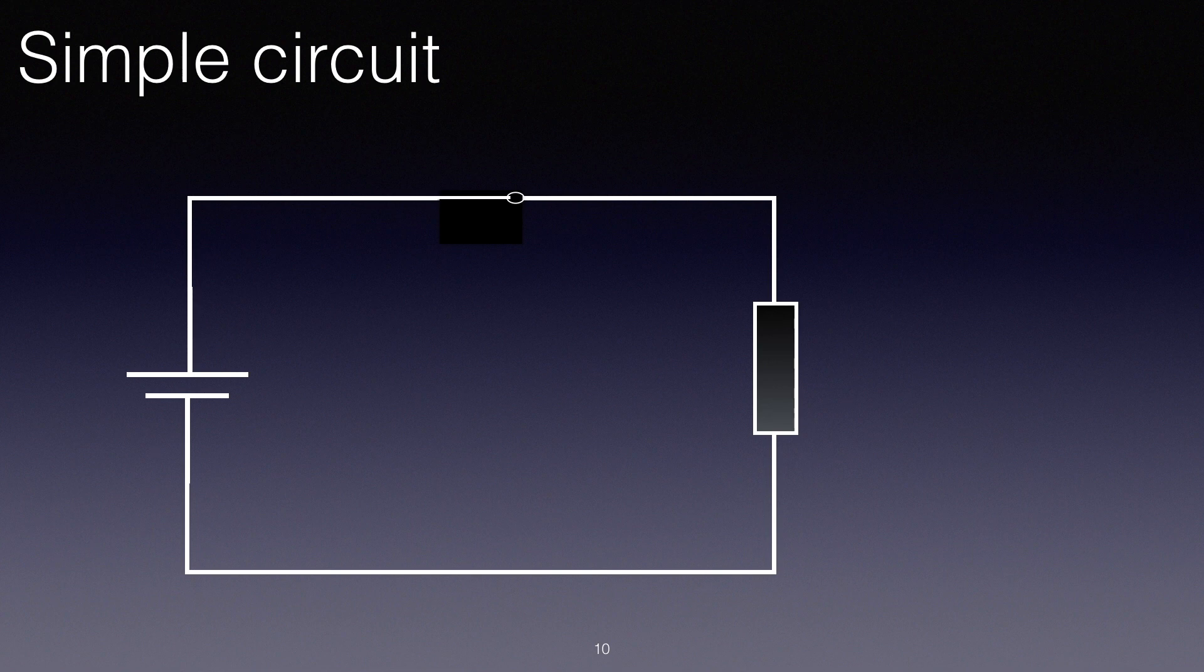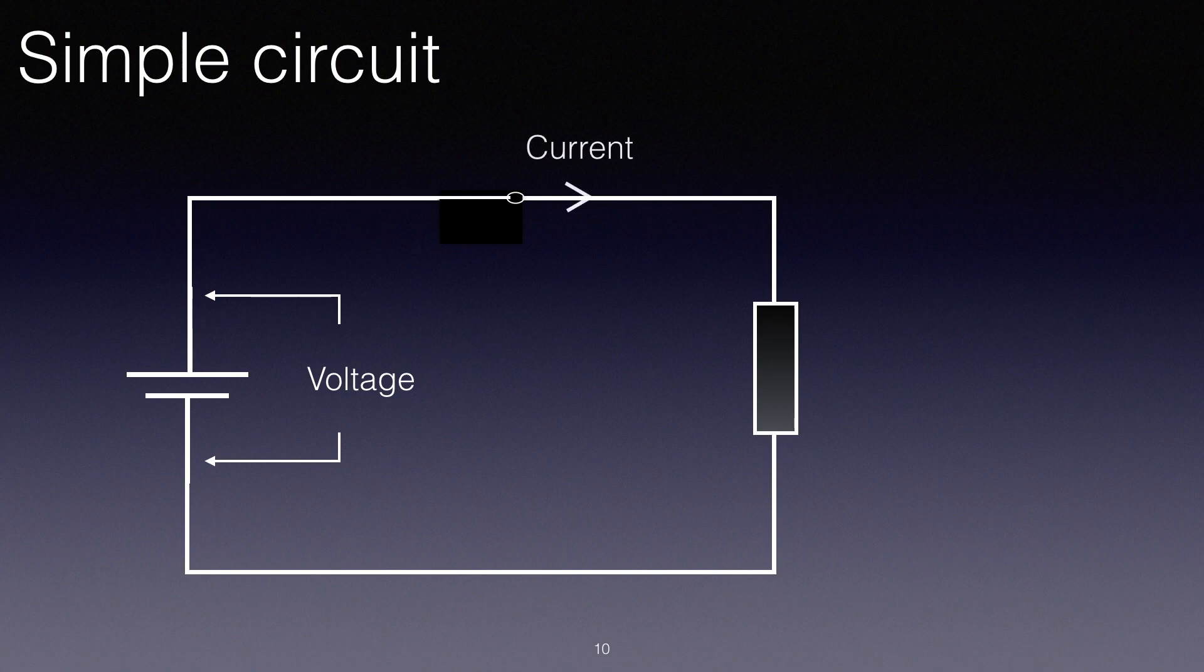We've shown the switch closed there. Now across the cell we'll have some voltage, and that voltage will drive a current around the circuit. I've shown conventional current flowing from plus, which is the long bar on the cell, to minus, going clockwise.